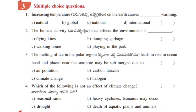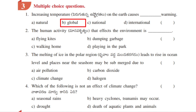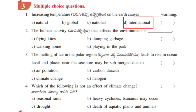Multiple choice questions. First: increasing temperature on the earth causes dash warming. A. Natural, B. Global, C. National, D. International. Answer: B. Global is the correct answer.